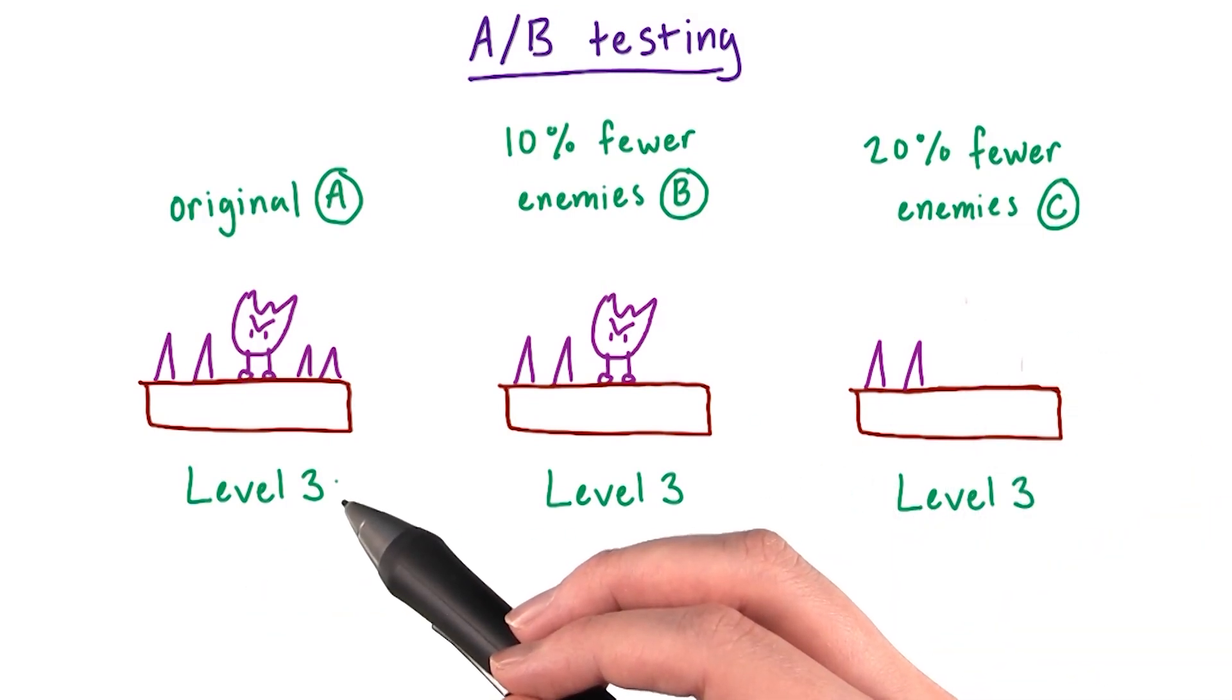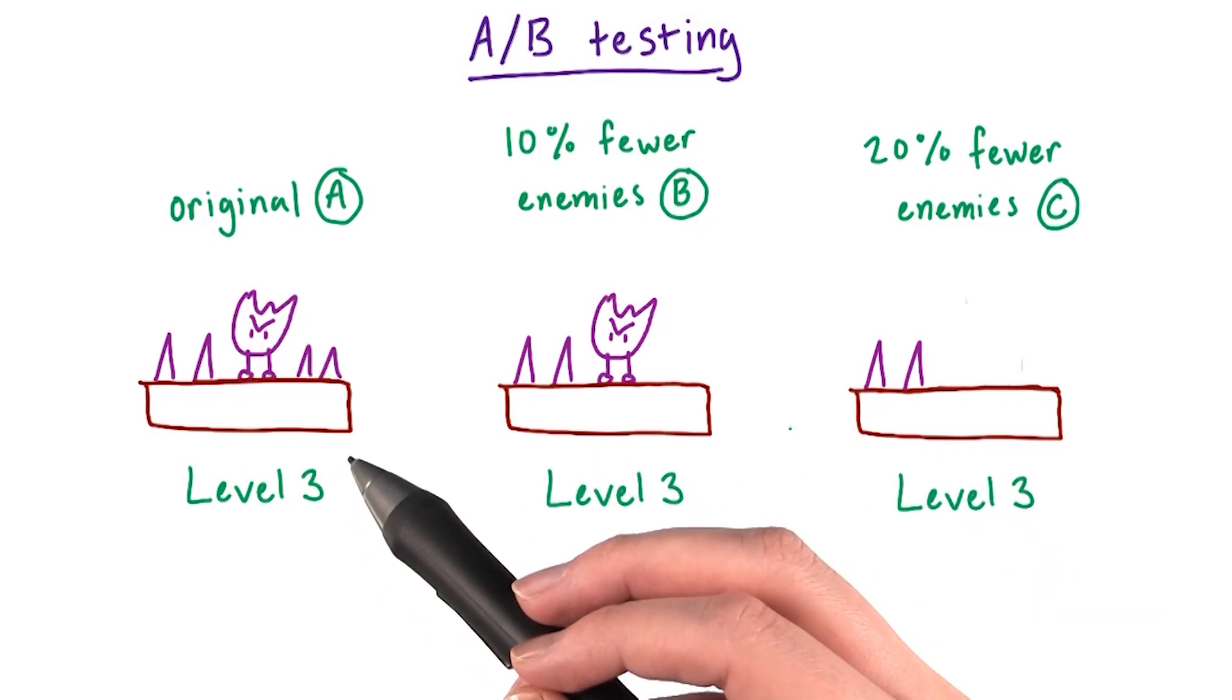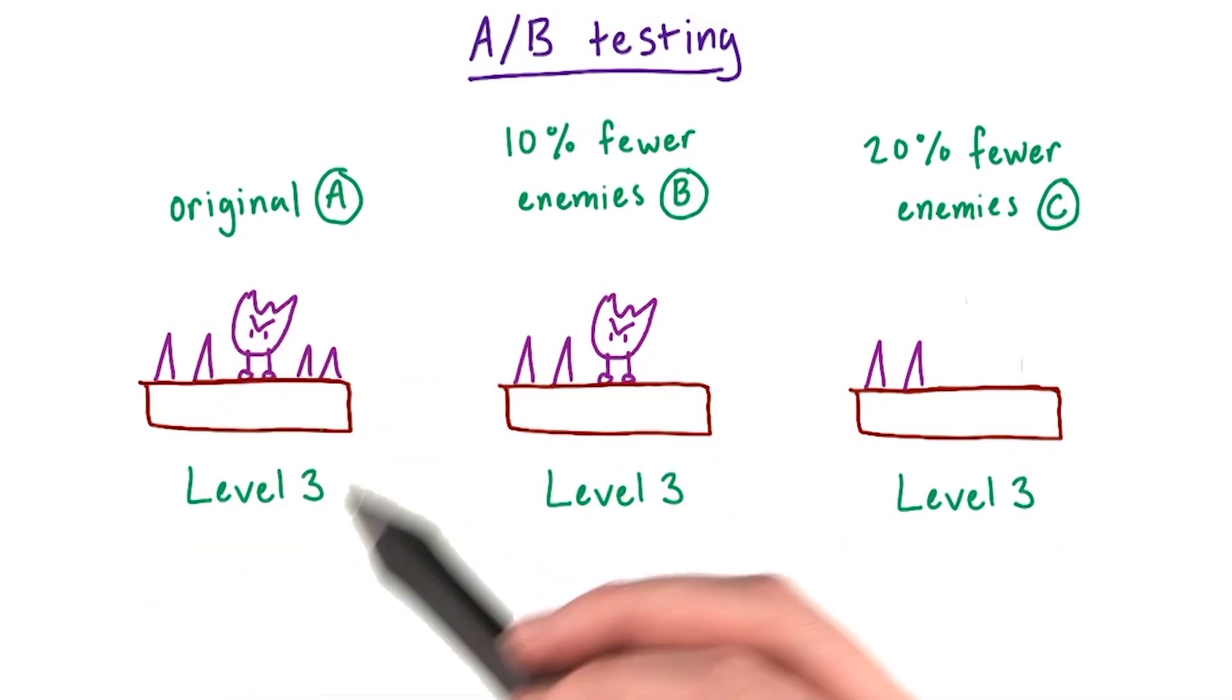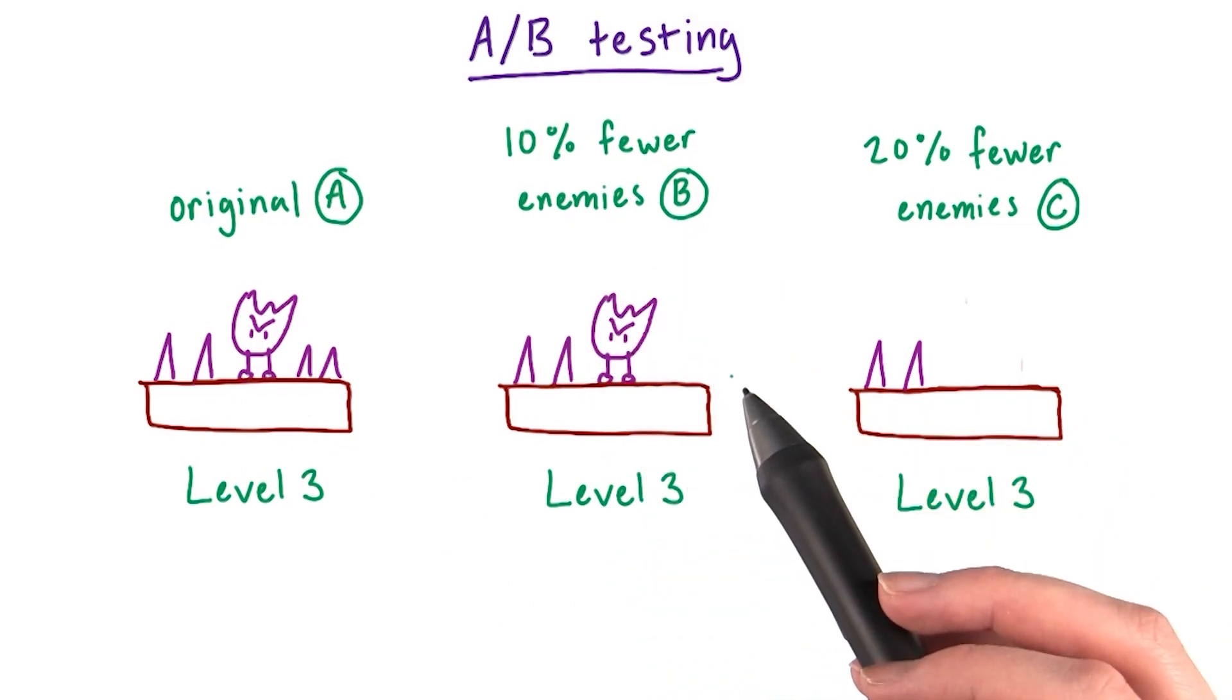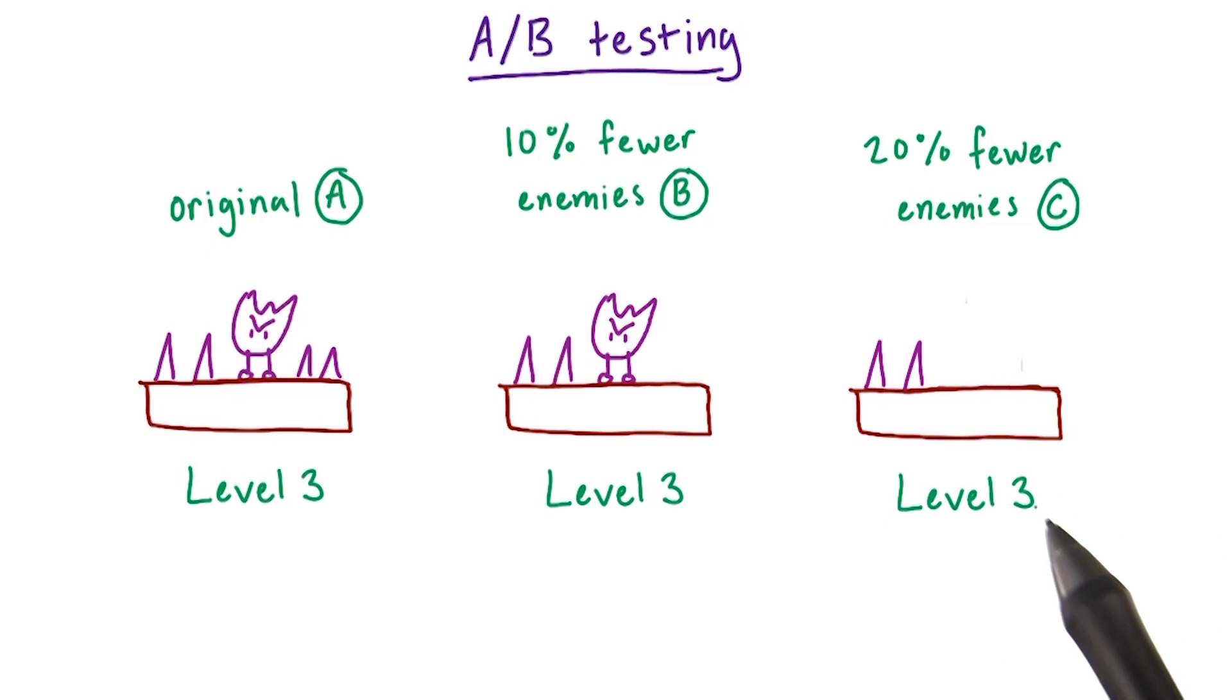You always want to test your original version in comparison to the new ones. So we have an A original version, a version B with 10% fewer enemies, and a version C with 20% fewer enemies.